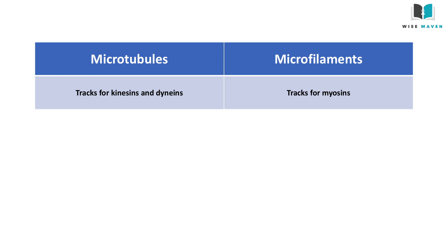Microtubule proteins track for kinesins and dyneins. Kinesins moving along microtubules usually carry cargo, such as organelles and vesicles, from the center of a cell to its periphery, whereas dyneins are important in sliding microtubules relative to one another during the beating of cilia and flagella on the surface of some eukaryotic cells. Dyneins move towards the negative end of the microtubule and kinesins move towards the positive end of the microtubule.